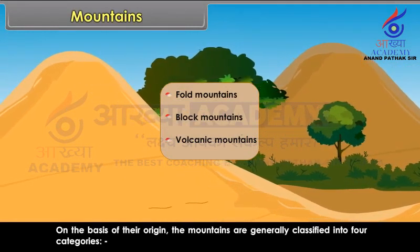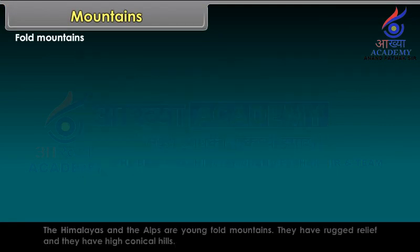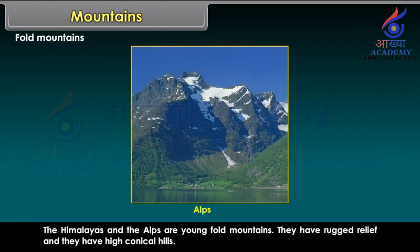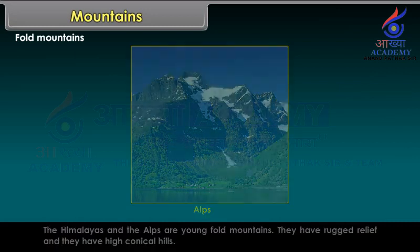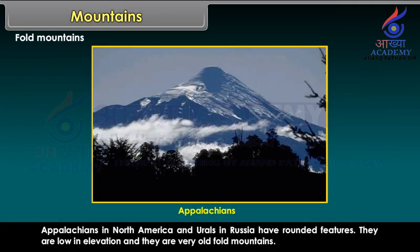Fold Mountains are mountains formed because of the folding process of the strata. The Himalayas and the Alps are young fold mountains; they have rugged relief and high conical hills. Aravallis in India are old fold mountains, worn down by the processes of erosion. Appalachians in North America and Urals in Russia have rounded features; they are low in elevation and very old fold mountains.